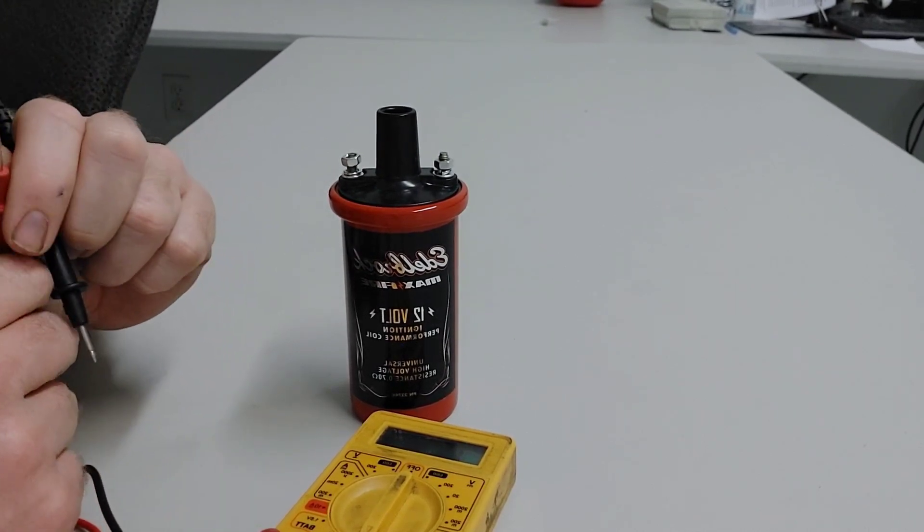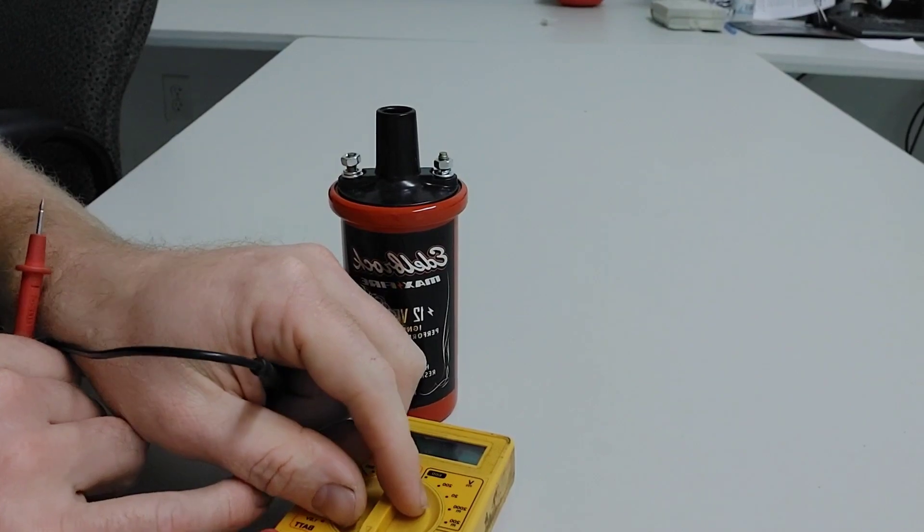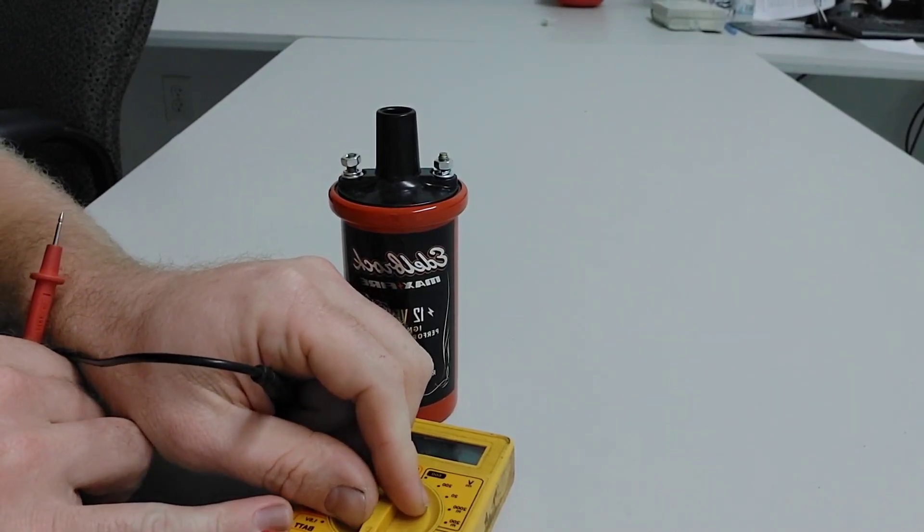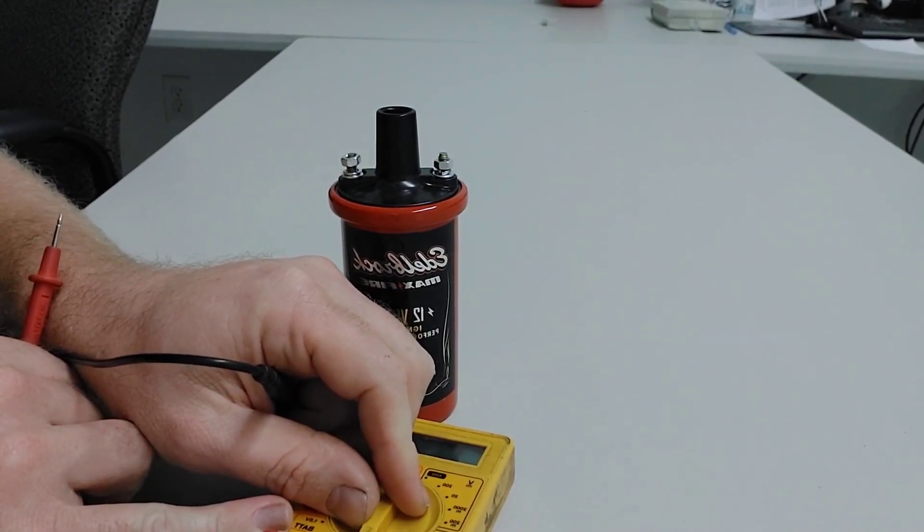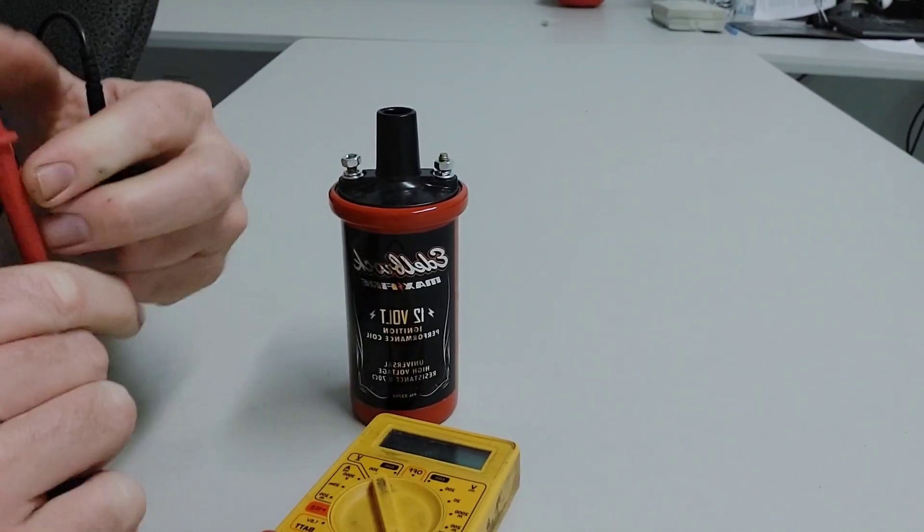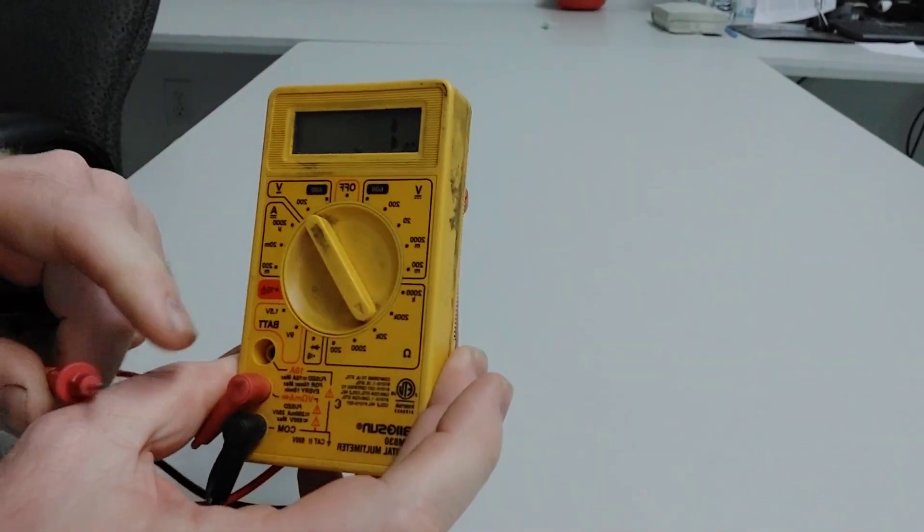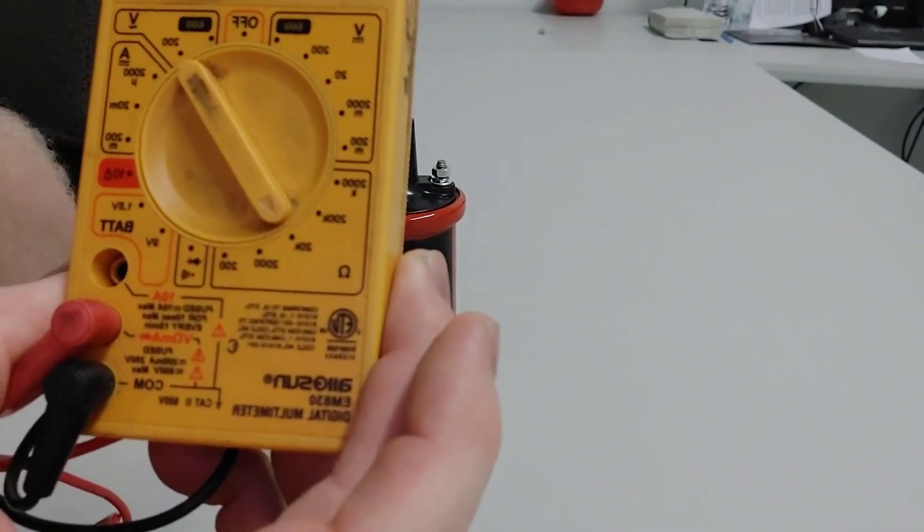To check the secondary, you're going to be depending on the coil anywhere from 10,000 to 12,000 ohms, so I'll move the multimeter to 20k. Down here I'm at 20k on the ohms setting.